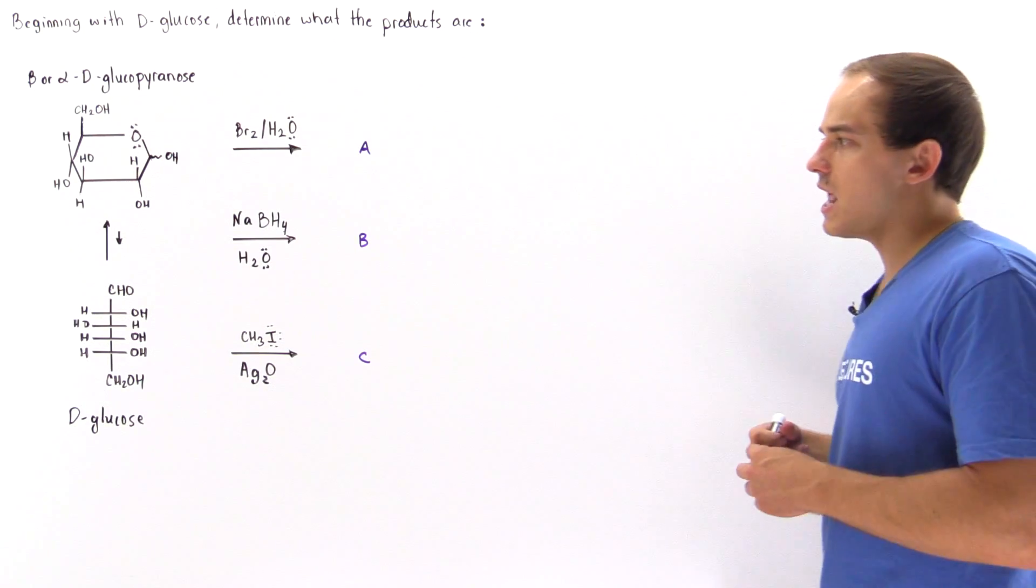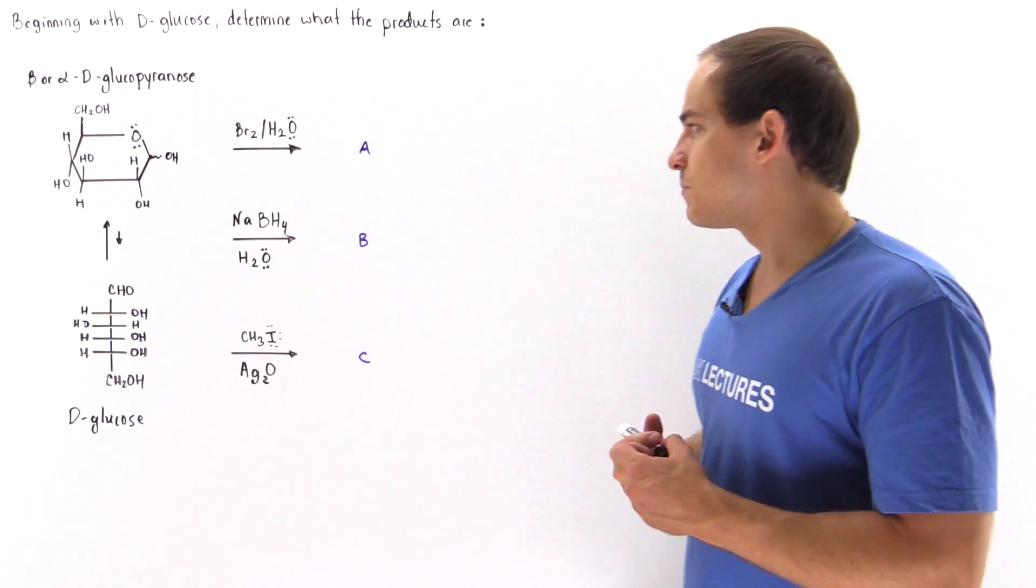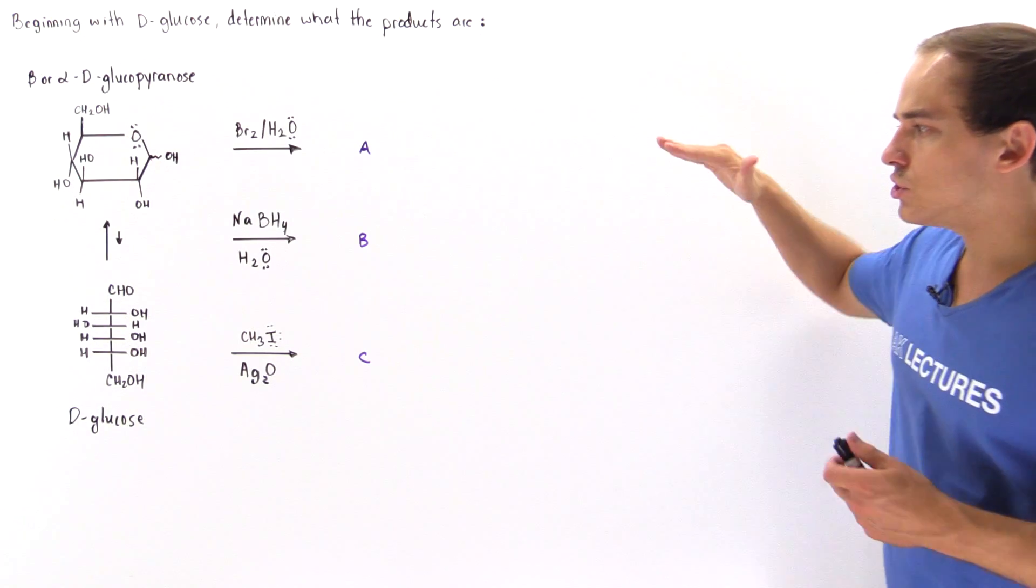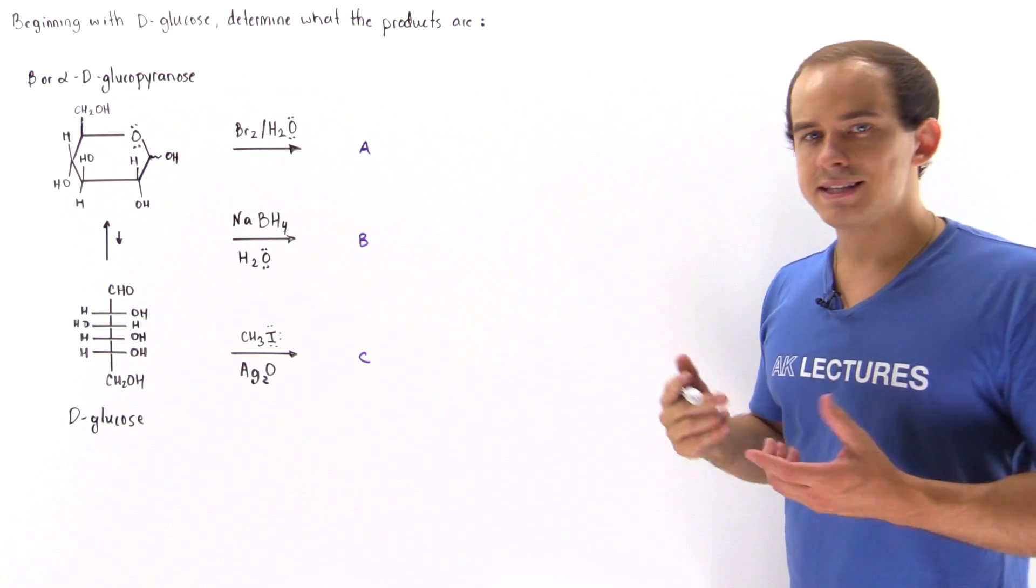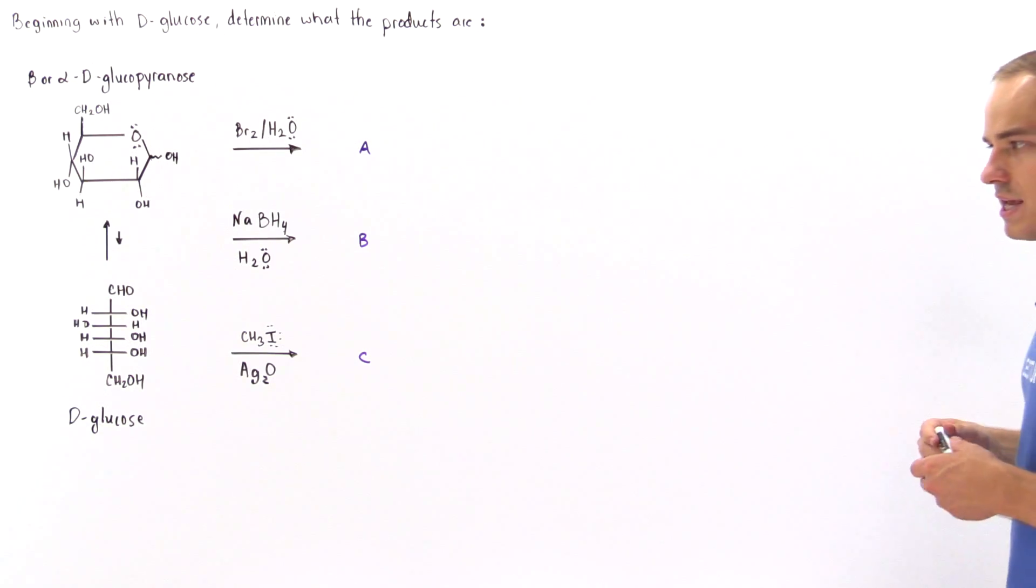So what is product A, what is product B, and what is product C? Now we already looked at each one of these reactions in detail, so let's simply state what the products will be.